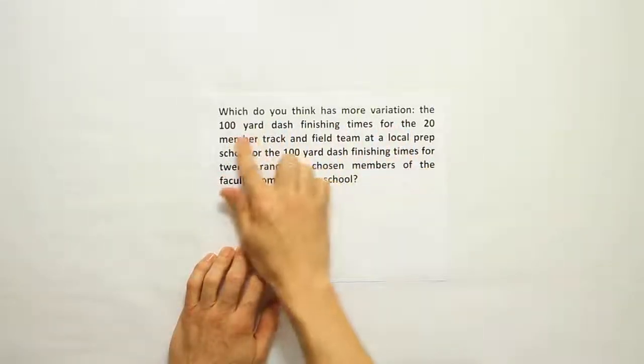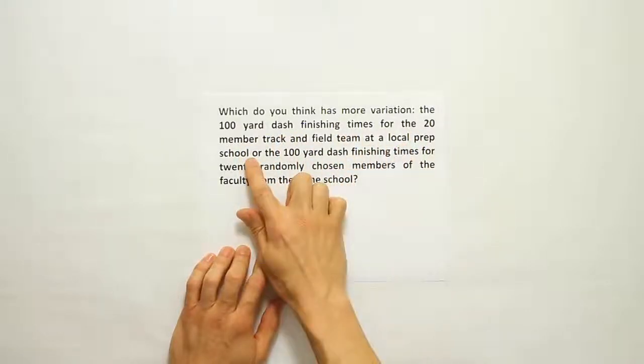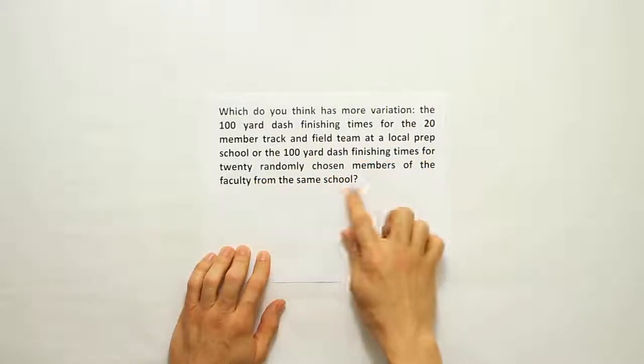Which do you think has more variation? The 100-yard dash finishing times for the 20-member track and field team at a local prep school, or the 100-yard dash finishing times for 20 randomly chosen members of the faculty from the same school?